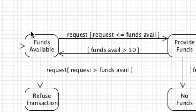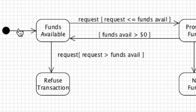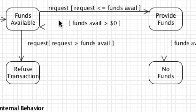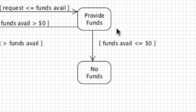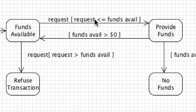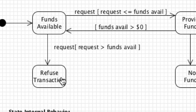Another more complex state machine diagram starts at the initial state, asks 'are funds available?', and if the request is less than or equal to funds available, it provides the funds. Then if funds available is less than or equal to zero, it goes to a 'no funds' state. Otherwise, if funds available is greater than or equal to zero, it bounces back to the funds available state, and if the request is greater than funds available the transaction is refused altogether.